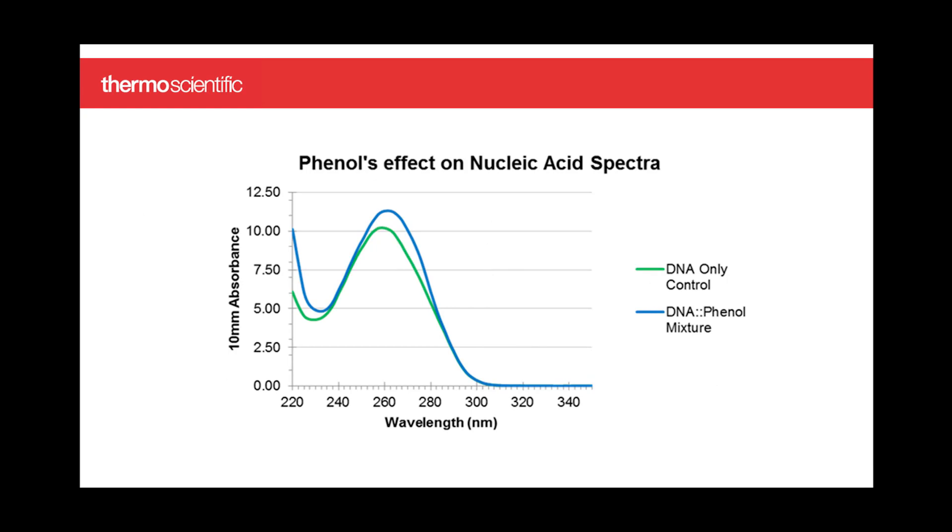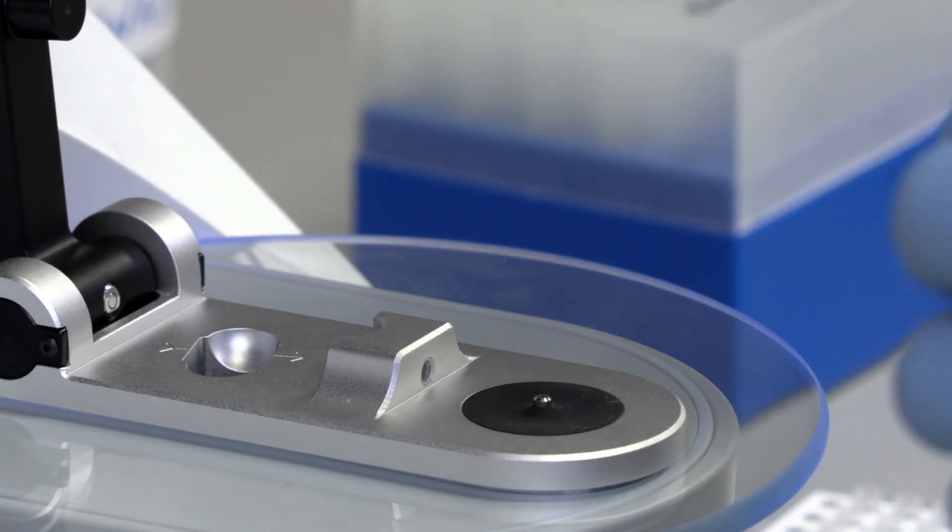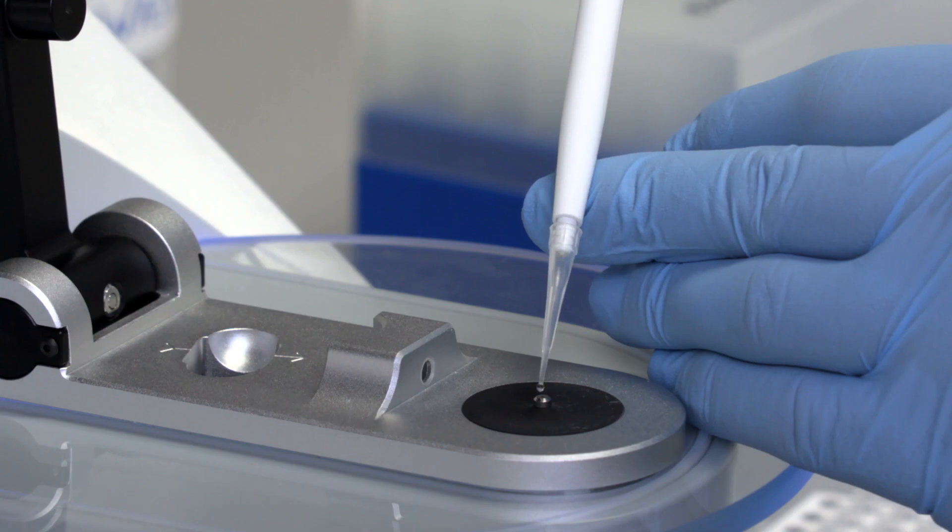The presence of phenol overestimates your nucleic acid concentration, which means you don't put enough template into the reaction. Guanidine salts inhibit polymerases and block the reaction. The Acclaro technology gives you information about your sample that no other software can.